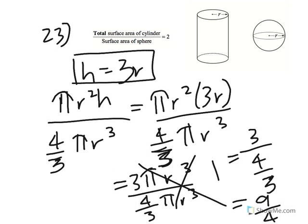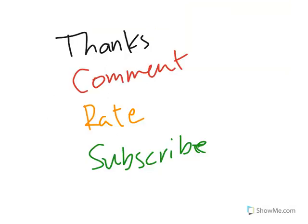And 9 over 4 is the value for the volume of the cylinder over the volume of the sphere. This question wasn't that hard! Thanks for watching — please comment, rate, and subscribe. Comment if you have any questions, and I'll see you in the next video.